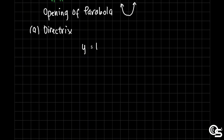From summary table number 3, the equation of our directrix is y equals k minus p. Substituting our values: y equals 3 minus 1, which simplifies to y equals 2. That is the equation of our directrix.